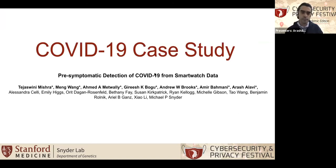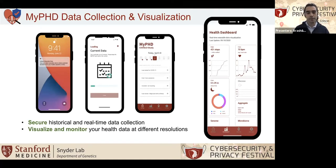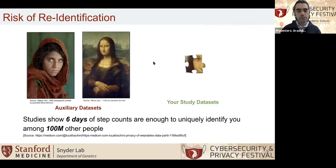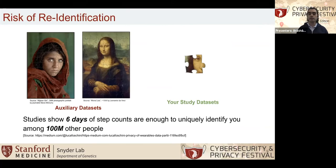Here is a case study around PHD. This paper got accepted recently by Nature Biomedical Engineering, coming out hopefully by end of November or early December, around early detection of COVID-19. The front end of our system, myPHD, helps us securely collect historical and real-time data and helps participants visualize and monitor their health data at different resolutions. The challenge is that once you're done with your study, you have to share data with other researchers for reproducibility — but studies show that six days of step counts are enough to uniquely identify you among 100 million participants.